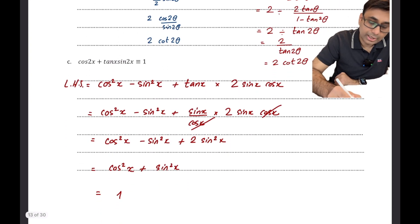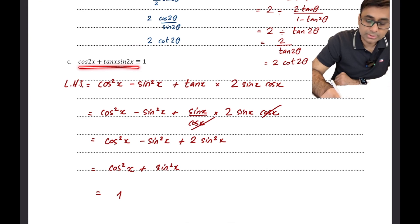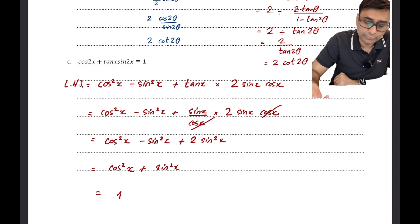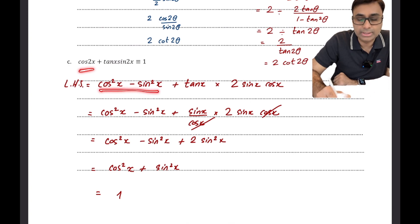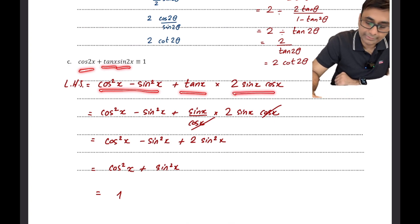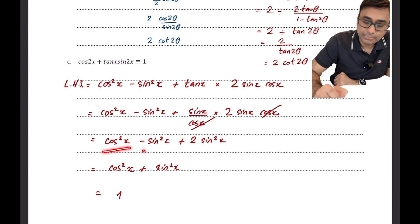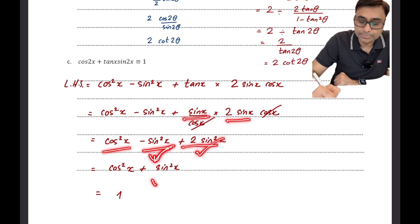Moving on: prove cos 2x + tan x · sin 2x. There is a clear indication I have to use the double angle formula because I can't simplify x with 2x. I replaced cos 2x by cos²x - sin²x, tan x is kept as is, and sin 2x becomes 2 sin x cos x. Then tan x becomes sin x/cos x, and cos x cancels, leaving cos²x - sin²x + 2sin²x.